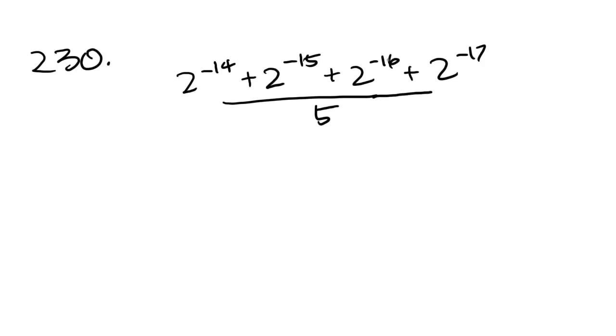Okay, 230, the final problem. 230 says the value of 2 to the negative 14, plus 2 to the negative 15, plus 2 to the negative 16, plus 2 to the negative 17, over 5, is how many times the value of 2 to the negative 17? So how many times the value of 2 to the negative 17? And we're looking for x.